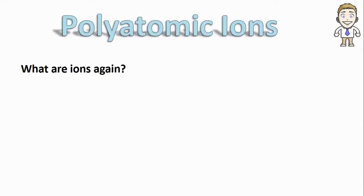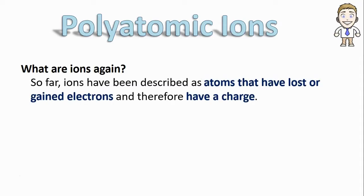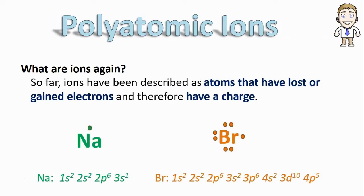Let's first remind ourselves what ions actually are again. We've been describing them so far as atoms that have lost or gained electrons and therefore have a charge, like sodium and bromine, where an electron transfers and sodium gets a plus one charge.